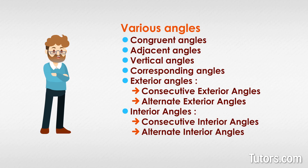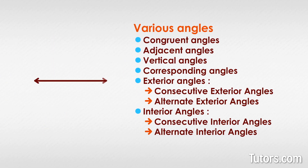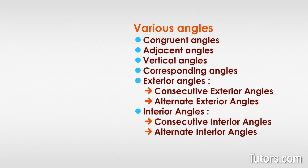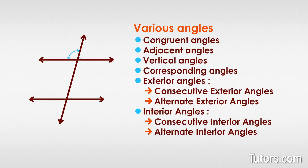Beyond measuring the degrees or radians, you can also compare angles and consider their relationship to other angles. We talk of angle relationships because we are comparing position, measurement, and congruence between two or more angles. For example, when two lines or line segments intersect, they form two pairs of vertical angles. When two parallel lines are intersected by a transversal, complex angle relationships form, such as alternating interior angles, corresponding angles, and so on.